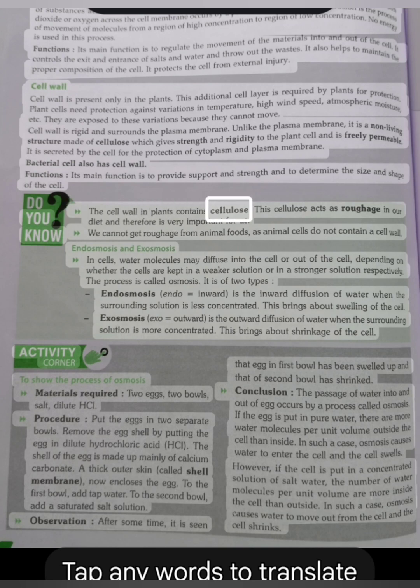The cell wall in plants contains cellulose. This cellulose acts as roughage in our diet and therefore is very important for us. We cannot get roughage from animal foods as animal cells do not contain a cell wall.